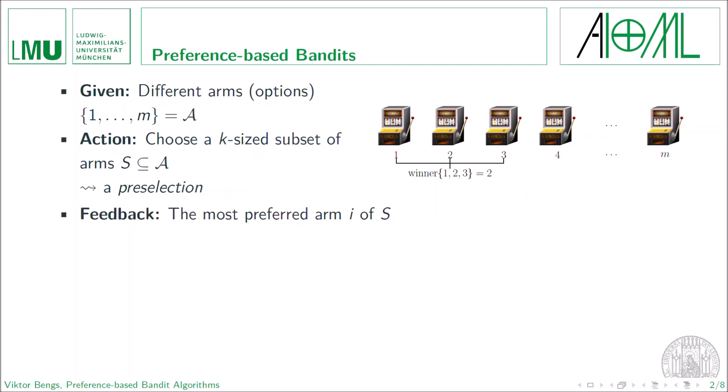And then for this preselection, we observe through an external mechanism the most preferred arm, or what we will call the winner of the preselection. So for example, from the preselection consisting of the first three arms, we observe that the second arm is the most preferred one, because it has metaphorically generated the highest payoff.